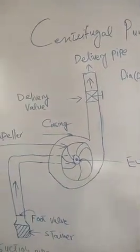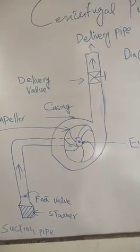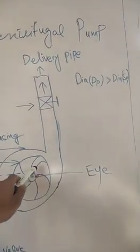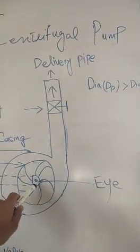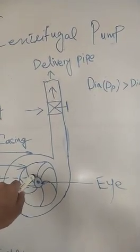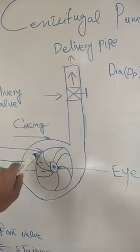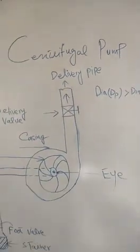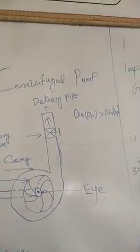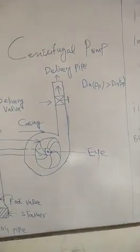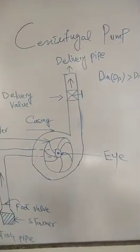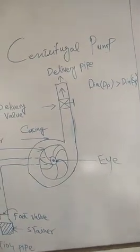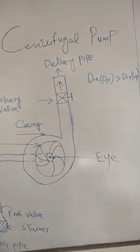The impeller concept is now clear. When water comes from the suction pipe into the impeller, it first enters through the eye (inlet). The eye directs the water into the vanes. As the impeller rotates, water passes through the casing and goes forward into the delivery pipe. The diameter of the delivery pipe is larger than the suction pipe, which reduces the velocity and thereby increases the pressure of the water.